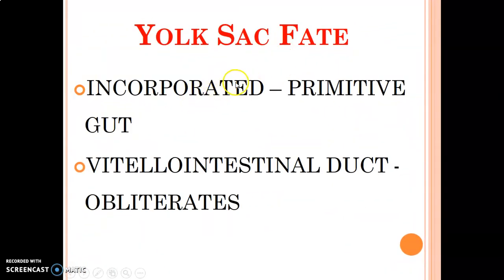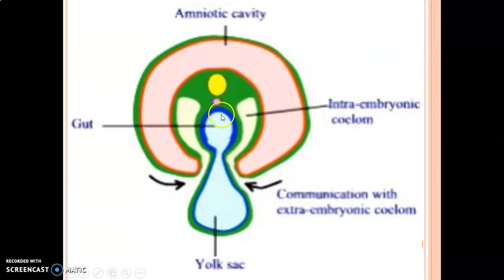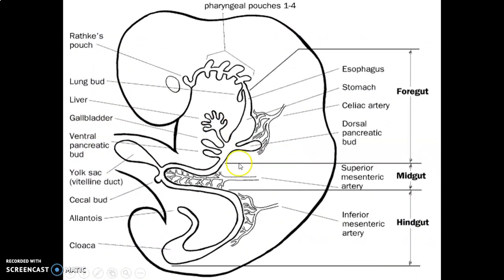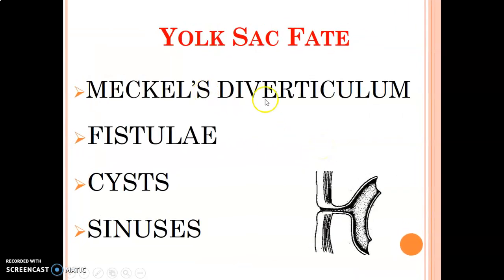The fate of the yolk sac: it will be incorporated to form the primitive gut — the primitive gastrointestinal tract — and then forms a vitelline intestinal duct that usually obliterates. The yolk sac is incorporated into the developing GIT, forming the foregut, midgut, and hindgut. If the vitelline duct does not obliterate, you can get a Meckel's diverticulum. If there is communication between the skin and the GIT epithelium, you get a Meckel's fistula — a fistula being a communication between two epithelial-lined surfaces. You can also get a Meckel's cyst or vitelline sinuses.